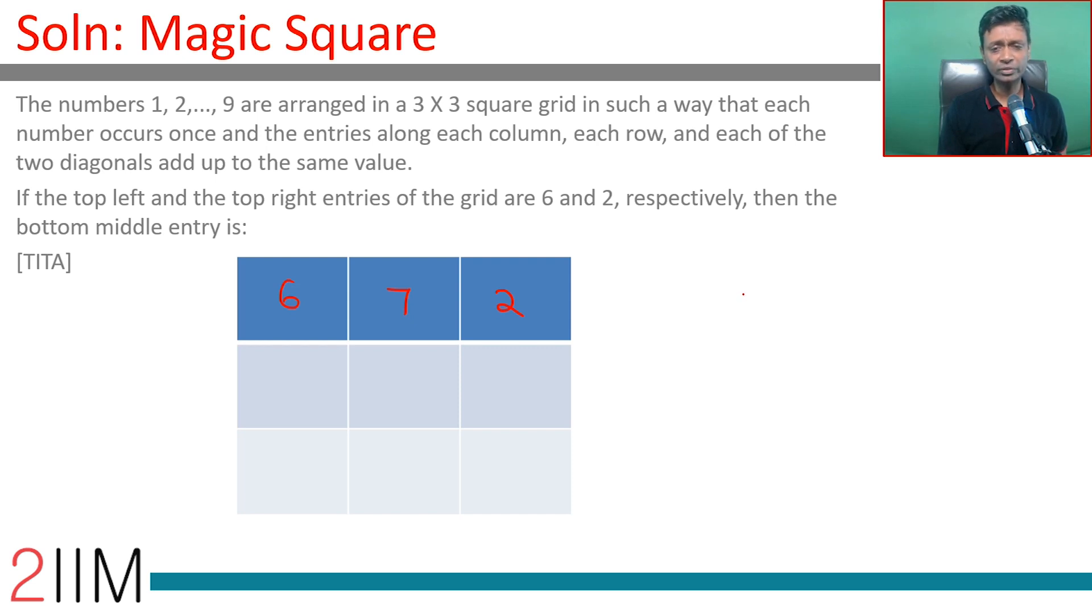As a simple rule of thumb in all these magic square questions, you can take it for granted that the middle number, which is going to be part of four different sums, is going to be the middle number from 1 to 9. Arrange 5 in the middle. Put the number bang in the middle. 7 plus 5 is 12, 12 plus 3 is 15.